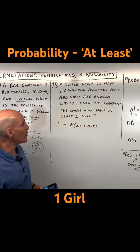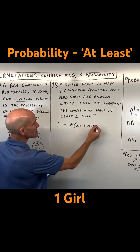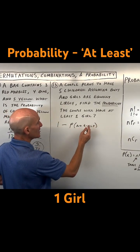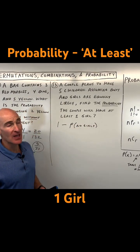So one, two, three, four, or all five. Now, no girls is another way of saying all boys.